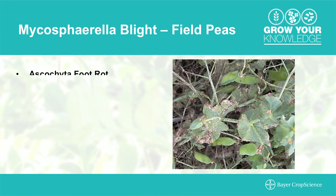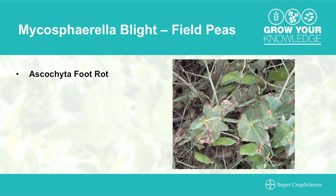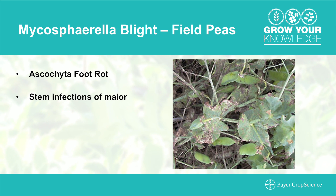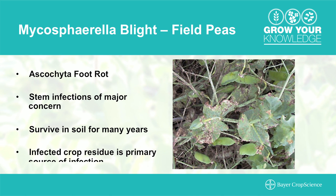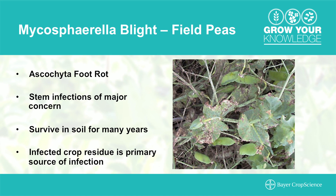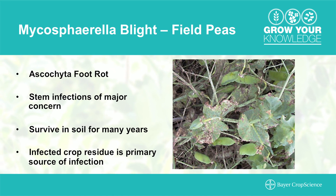Mycosphaerella blight, also known as Ascochyta foot rot, can be devastating for pea growers. This disease causes yield loss up to 50%. It is often seen on leaflets, but stem infections are also a major concern. This disease can live on crop residue for multiple years, and that is the primary source of infection. Mycosphaerella blight is brought on by cool, wet weather. It will infect all parts of the plant, including stems, leaves and pods.